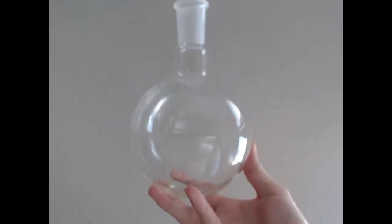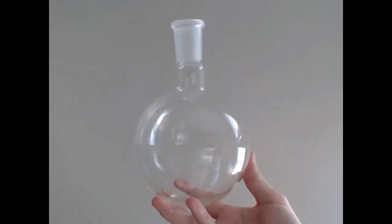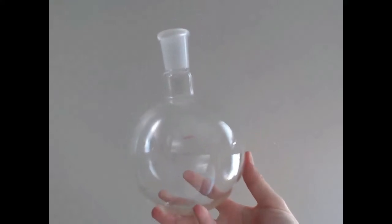This is the round bottom flask I just mentioned. This will contain the raw materials that will be heated by the heating mantle, which will cause the water and the oil to vaporize so it can be isolated.